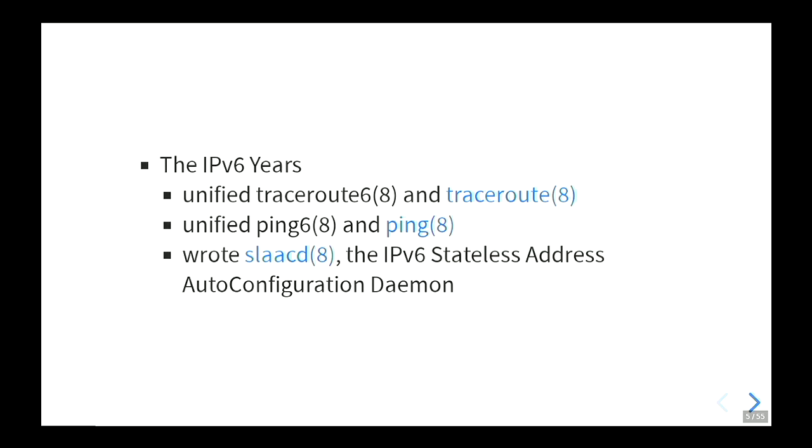Back to IPv6 — this was an offhand remark by Theo: why do we have two binaries for traceroute6 and traceroute, and two binaries for ping6 and ping? So we can have twice as many bugs? Or, as someone pointed out on the mailing list, if you break one tool, you can use the other one. Merging traceroute6 and traceroute was actually quite easy.